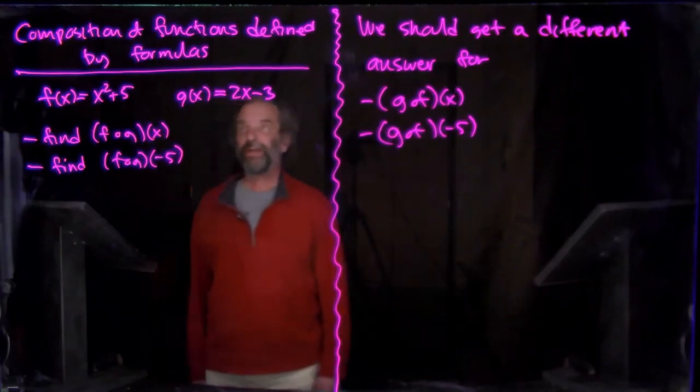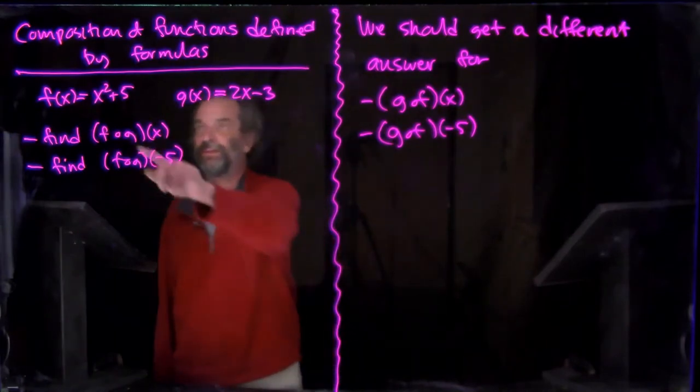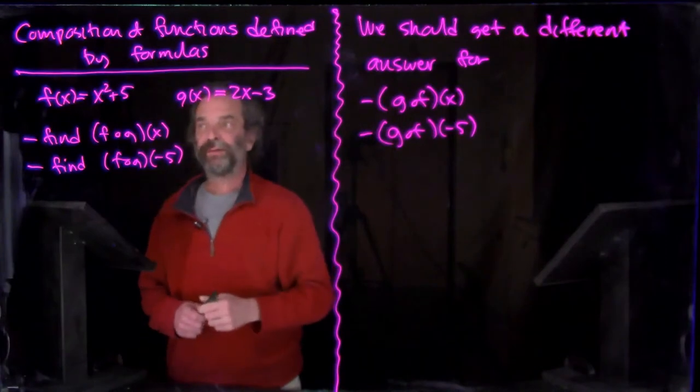We're talking about composition of functions defined by formulas. We've got f(x) = x² + 5, and g(x) = 2x - 3.